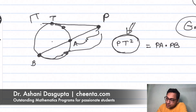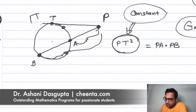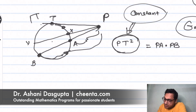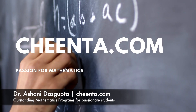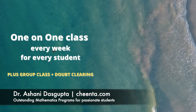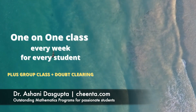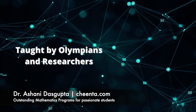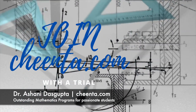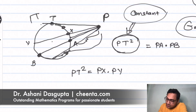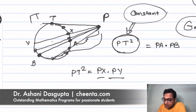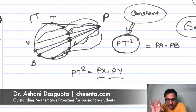So PT² is actually a constant — a very strong constant — given a point P and a given circle gamma. If you draw any other secant, let's say XY, then PT² also equals PX times PY. You can do this with any secant — that's the magic. Whenever you compute PX times PY, this product always equals the square of the distance from the tangent point.